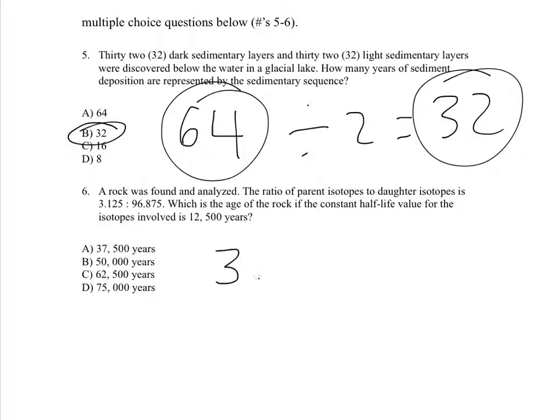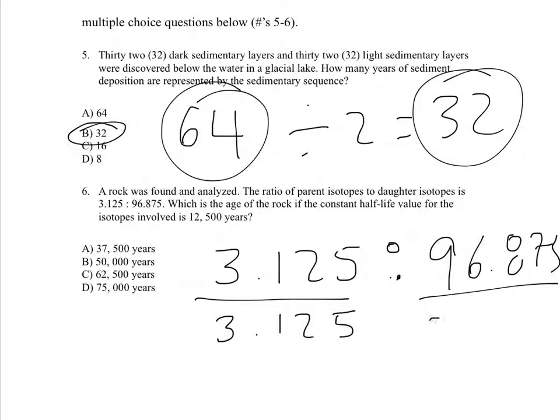On to the next problem. We have a ratio, you can see, and it's 3.125 to 96.875. So to reduce a ratio, what we do is we divide both sides by the smallest number. So we're going to divide both sides by 3.125. And so when we actually do that, what we'll actually find is we have 96.875, and we're going to divide that by 3.125, and this comes out to be a ratio of 1 to 31, which is a fraction of 1 over 32.